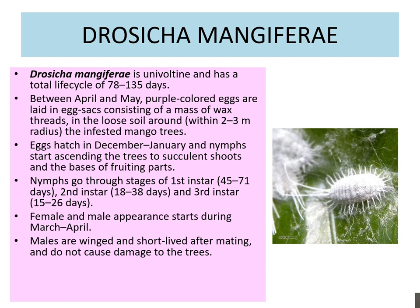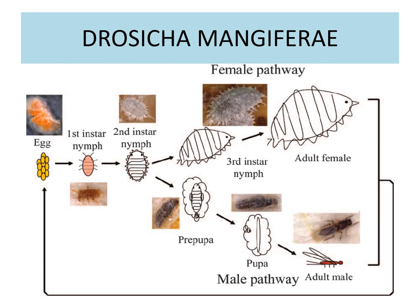Males are winged and short-lived after mating and do not cause damage to the trees. The life cycle of Drosica mangiferae proceeds as follows: eggs are laid, then hatch into 1st instar nymphs, 2nd instar nymphs, 3rd instar nymphs, and two types of individuals are produced — female and male. The female is wingless and large; the male is winged and small. Males are always short-lived and die after mating. The female stays along with the further developing nymphs.